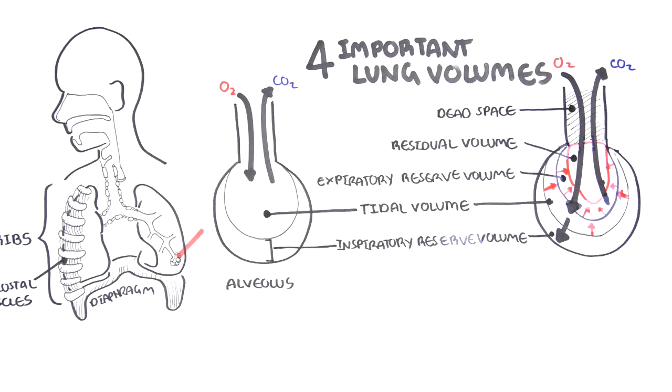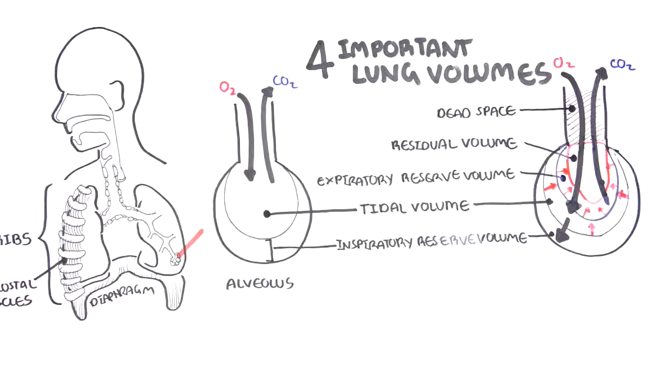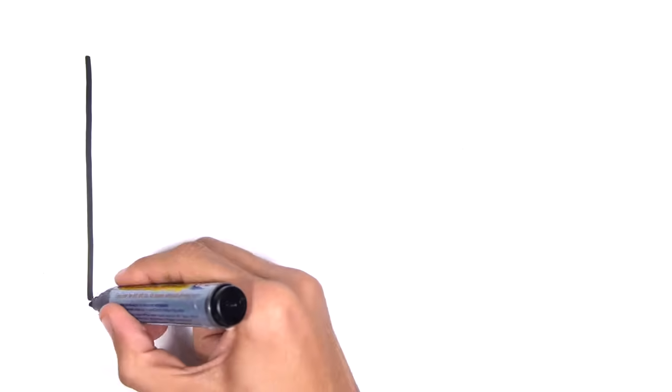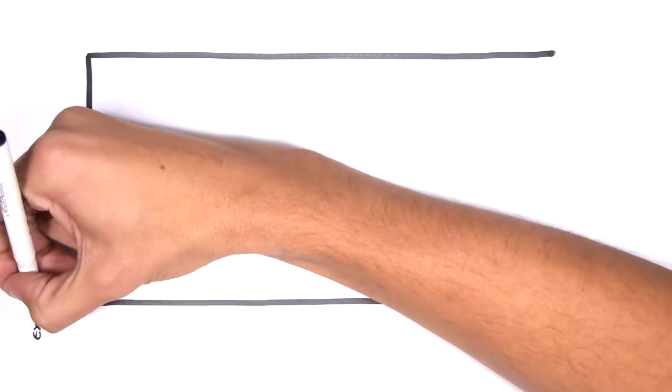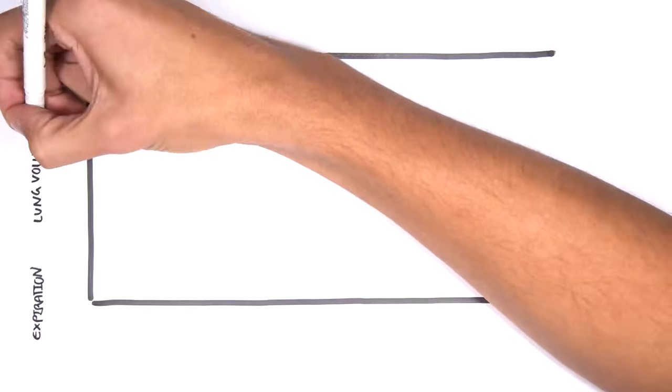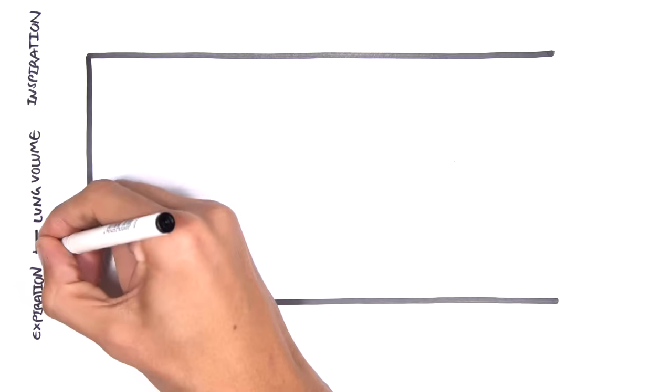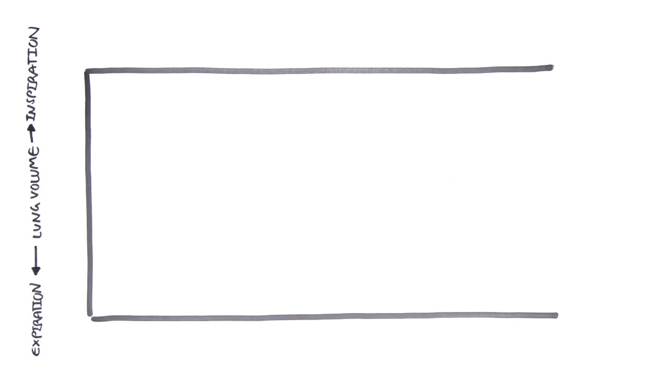Now let's learn more about those four volumes by representing it in a graph because these volumes have important implications in health and disease. So here is a graph on the y-axis is the lung volume in mils. Remember our total lung volume is about 6 liters, so 6,000 mils in adult males.